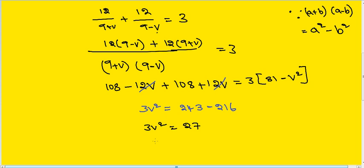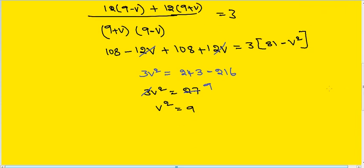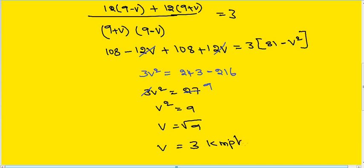Therefore, v squared equals 27 divided by 3, which equals 9. Taking the square root, v equals 3 kilometres per hour.